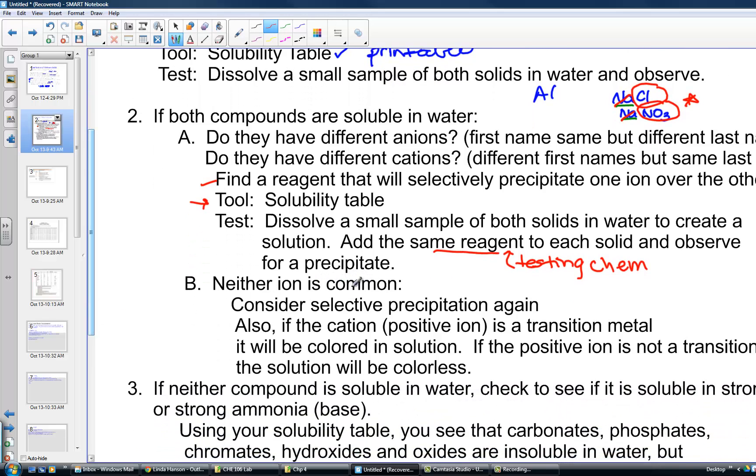If neither ion is common, let's say I have an unknown where I have two different first names and two different last names, consider if the positive ion is a colored transition metal. You can exploit that very quickly because those transition metals tend to be colored in solutions, like copper, iron, cobalt, or nickel. Whereas the first and second family metals tend to be just white compounds, and when dissolved they become colorless.